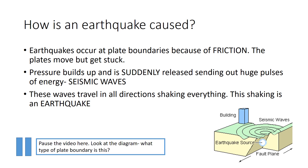But suddenly the pressure gets too much. One mass of rock gives way, slipping upwards. The stored energy is released in waves — huge pulses of energy — and these are seismic waves. They pass through the Earth in all directions, shaking everything. And the shaking is called an earthquake.